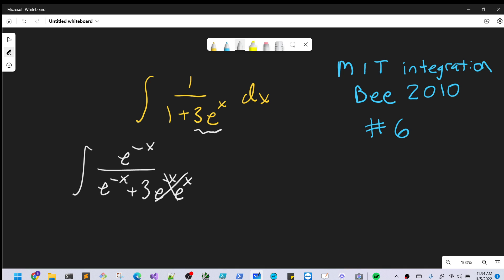At this point, I think we can do a u-substitution. Let's make u equal to the whole denominator here. So u = e^(-x) + 3, and then I take the derivative on both sides.